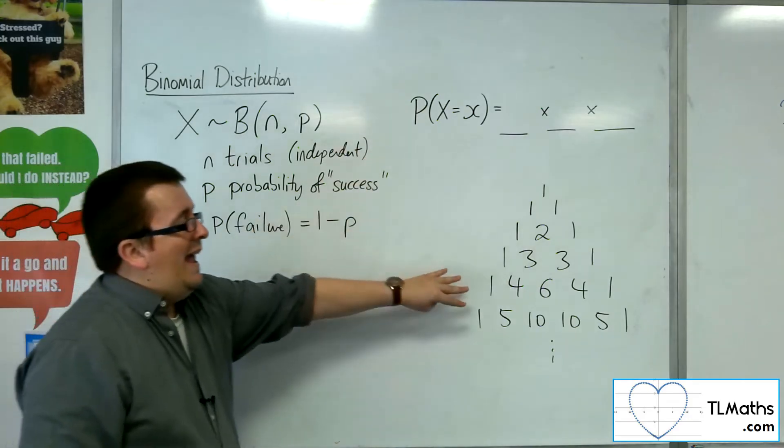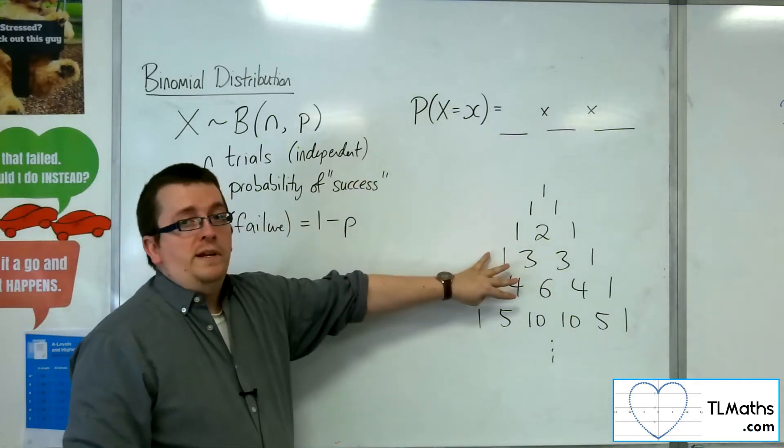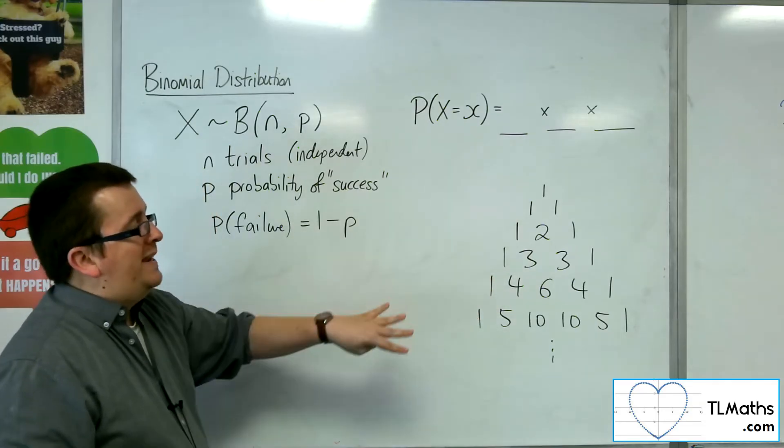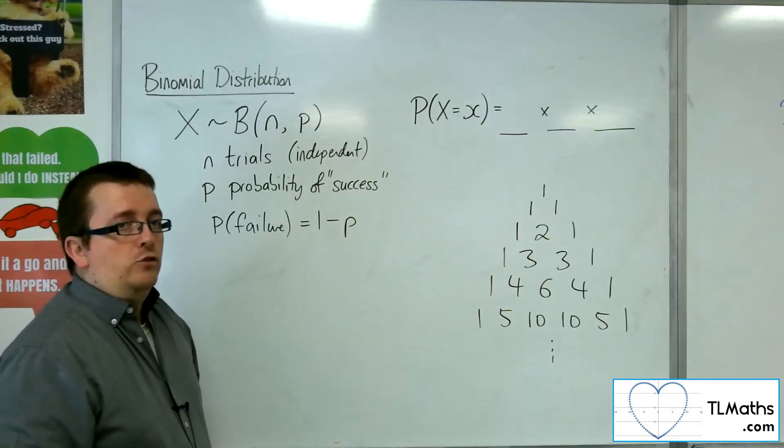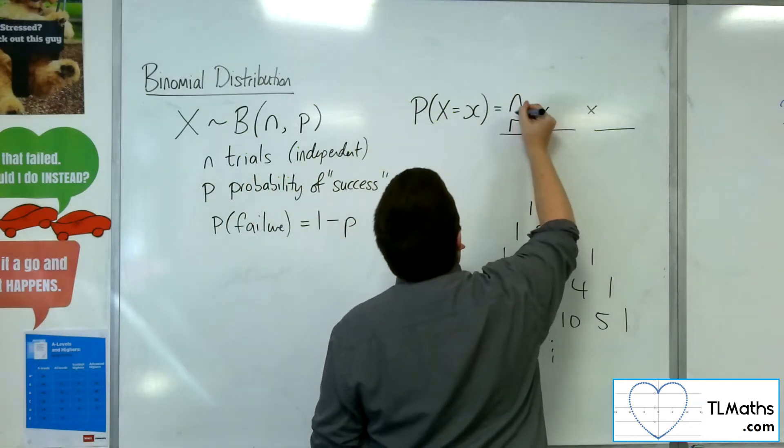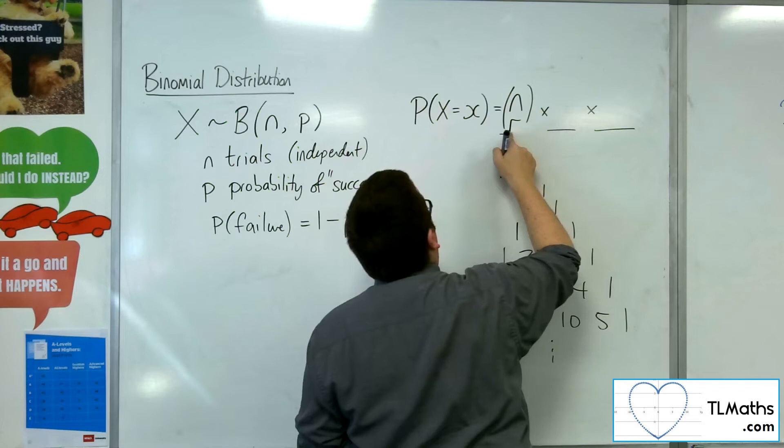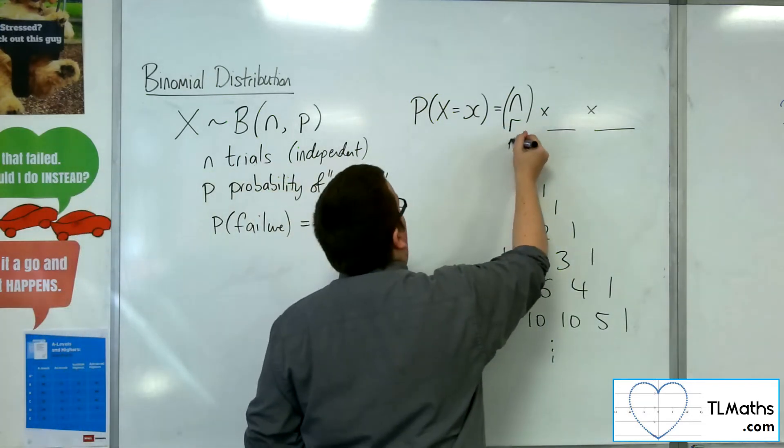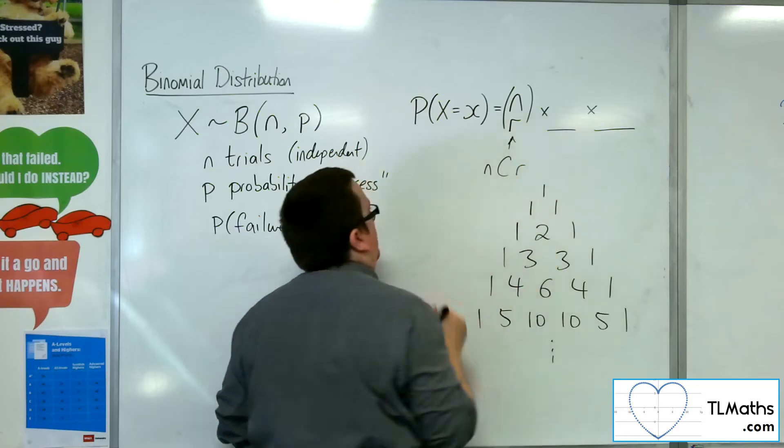So we had a formula, the nCr formula, that is able to pick out any number that's in Pascal's triangle, that uses the nCr button on your calculator. So that's the first piece of the puzzle. So that is your nCr on your calculator.